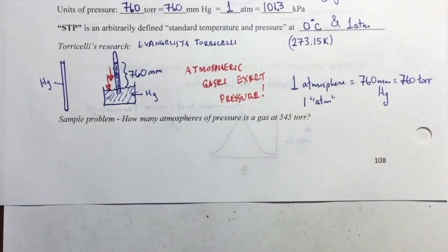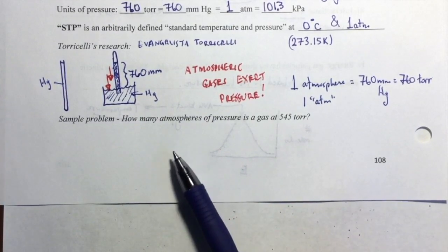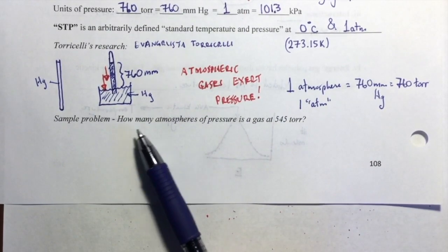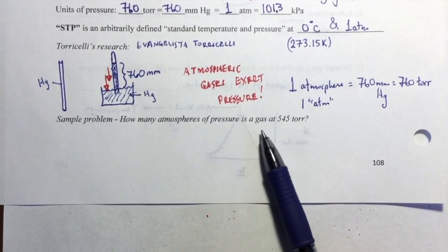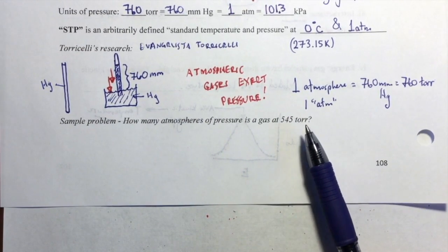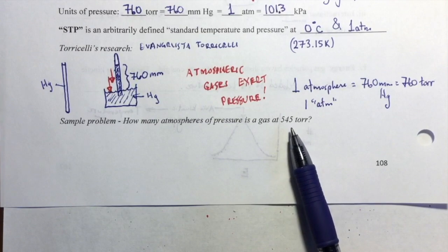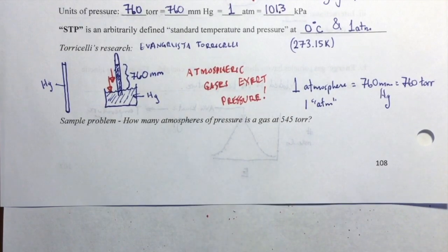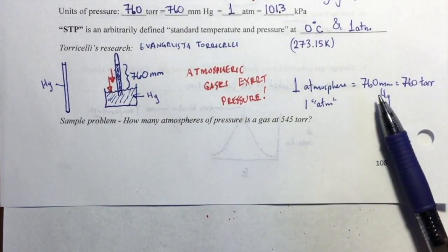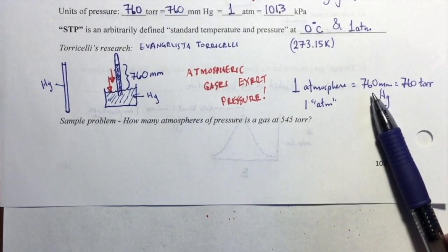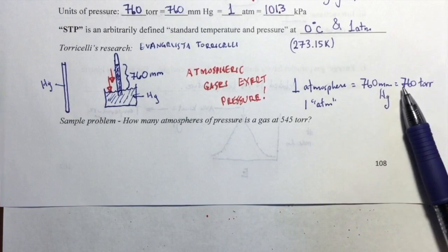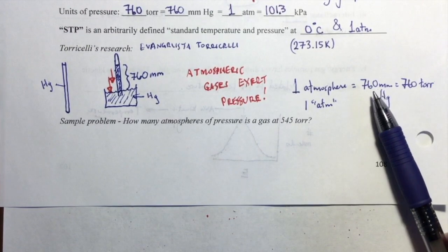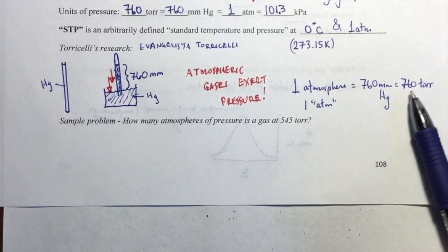I would like for you to take a moment and just do a quick conversion here. We know the conversion factors are up here. This sample problem says how many atmospheres of pressure is a gas at 545 Torr. Just pause the video and do this fairly quick calculation, convert from 545 Torr to atmospheres. When you do this, I would like for you to take a moment to consider these numbers, 760 right here. It looks like there are two sig figs here, right? It looks like that zero is not significant.